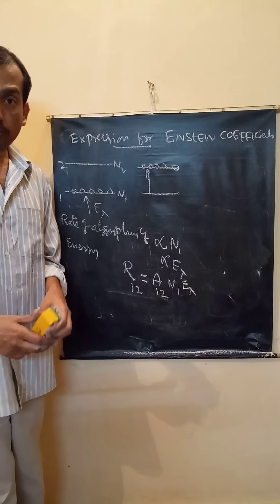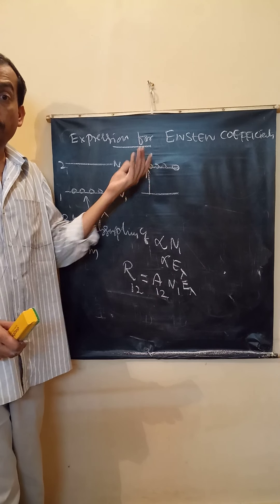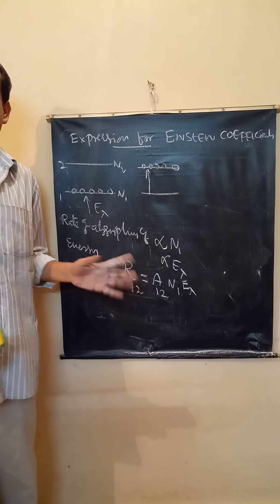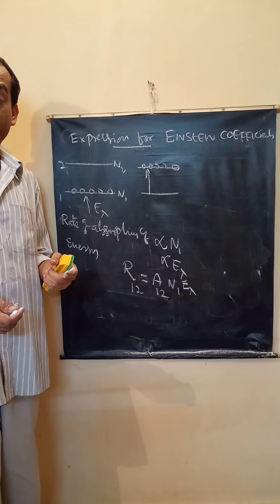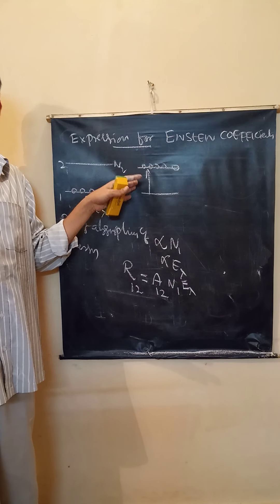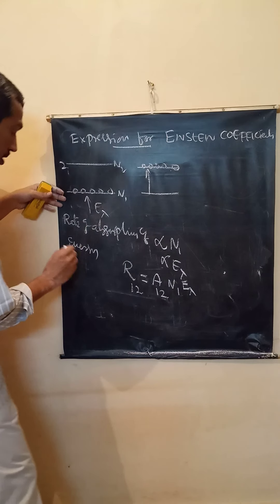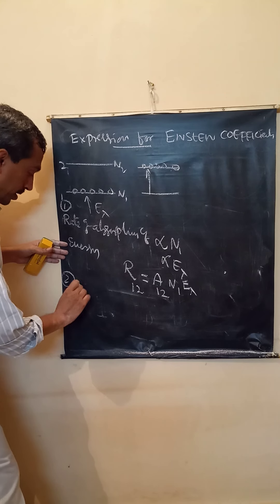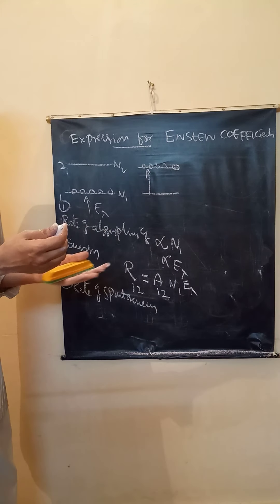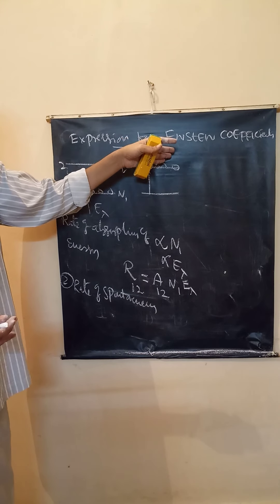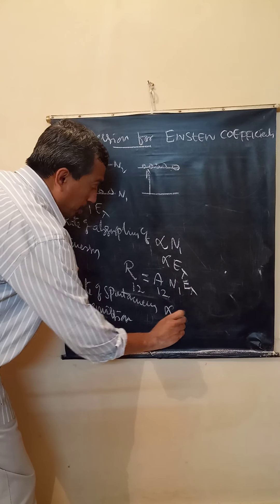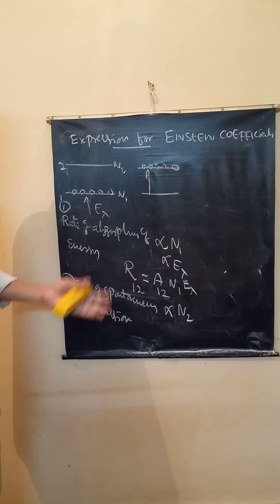Now atoms are in the excited state. If left to themselves, they randomly de-excite and produce spontaneous emission — that incoherent light will not be useful. The rate of spontaneous emission does not depend on any external agency; it just depends on the number of atoms in the excited state N₂. There is no external energy involved, no photon. The rate of spontaneous emission is proportional to the number of atoms in the excited state.